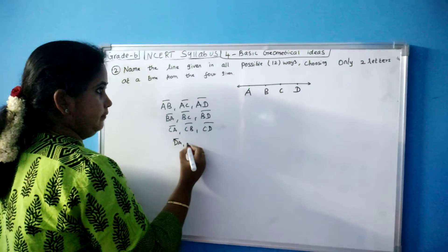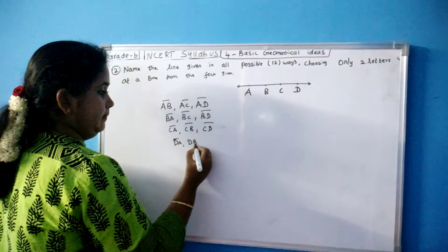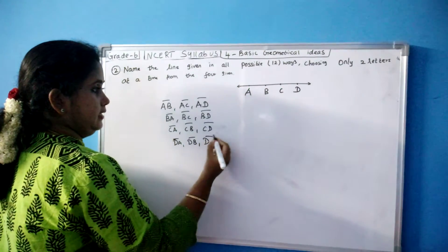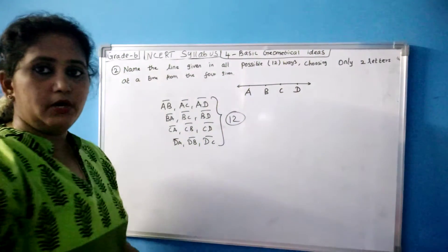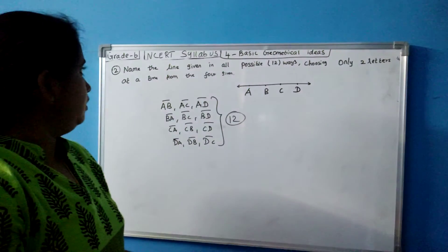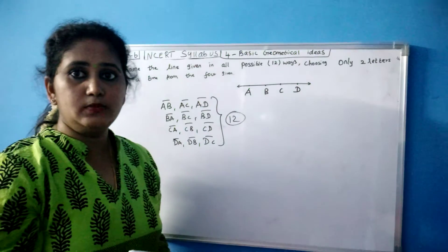Now DA, DB, DC. Now see, 4 into 3, 12 ways we wrote. So this is your answer for naming the line. These are the 12 lines.